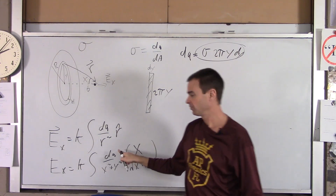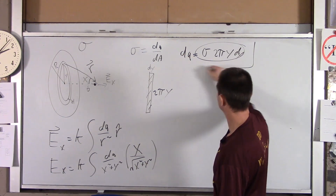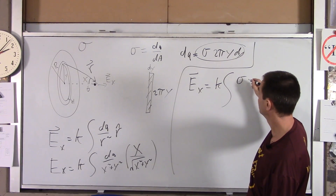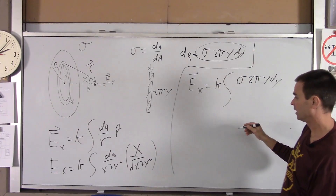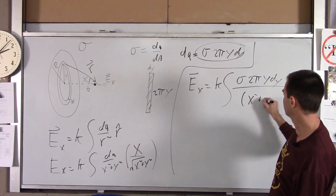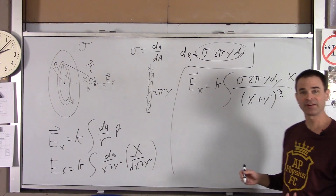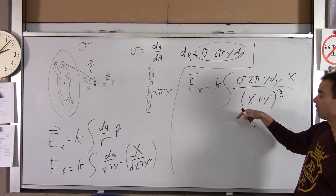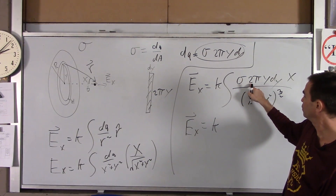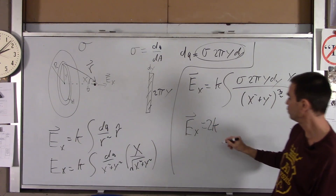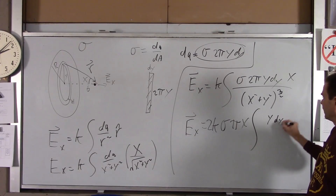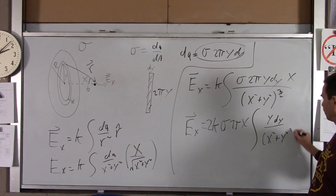Plugging all this in for dq, the electric field in the x-direction equals k times the integral of sigma · 2πy dy times x, all over x² plus y² to the three-halves. So your only variable now is y — x, pi, and sigma are all constants. I'm going to pull those out of the integral: E_x equals k times 2σπx times the integral of y dy over x² plus y² to the three-halves.